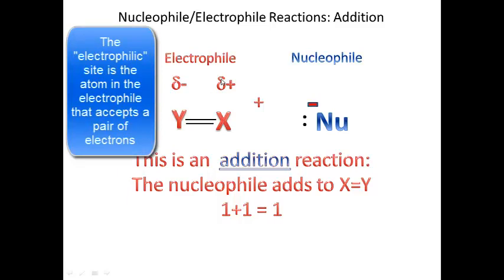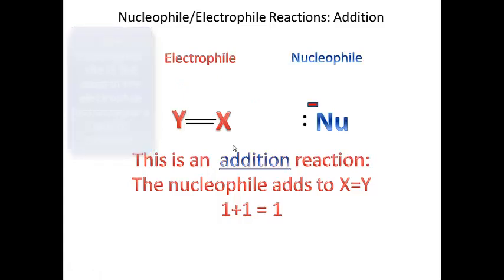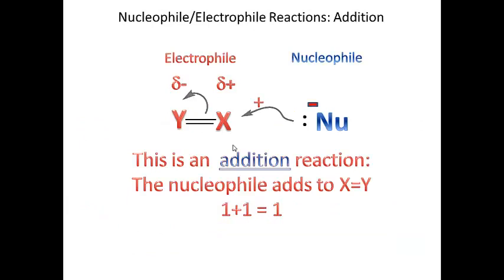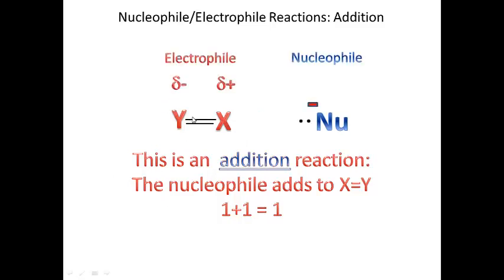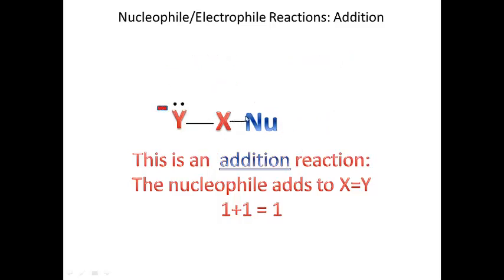Here are my arrows. The nucleophile is attacking X. The nucleophile comes in, makes a bond with X, and the pi bond between X and Y breaks. Watch the pi bond dissolve — a new bond between X and the nucleophile forms, and the pi bond simply becomes a lone pair of electrons on Y.